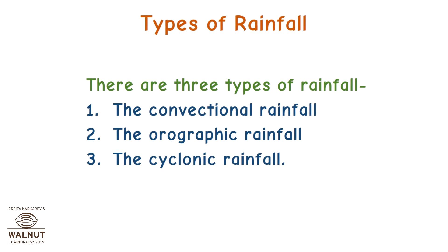Types of Rainfall. There are three types of rainfall: the convectional rainfall, the orographic rainfall, and the cyclonic rainfall.